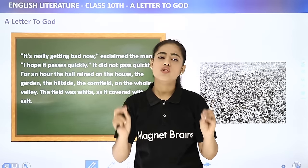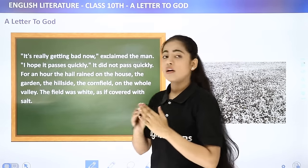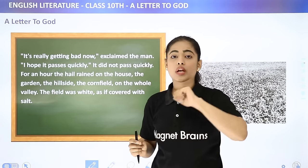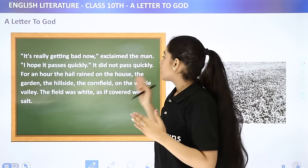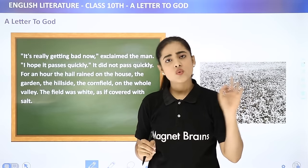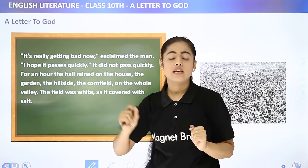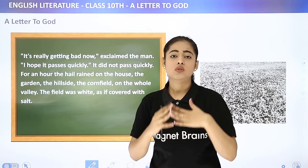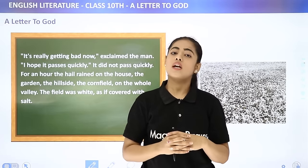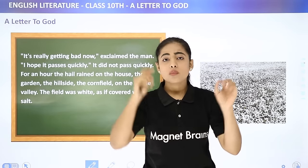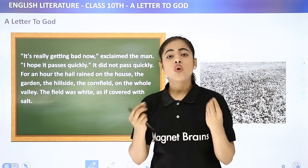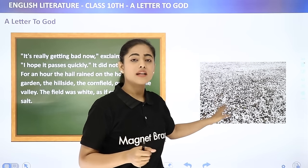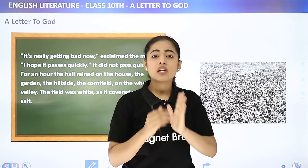For an hour the hail rained on the house, the garden, the hillside, and the cornfield — on the whole valley. The field was white as if covered with salt — another beautiful comparison. Hailstones are whitish, so covering the entire field they made it look as if someone had poured a huge amount of salt over it.